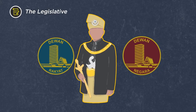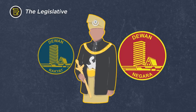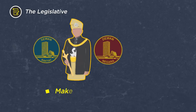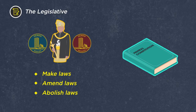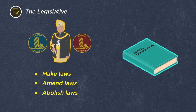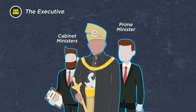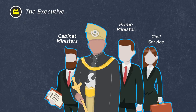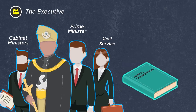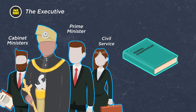The Parliament consists of the Yang Di-Pertuan Agong, the House of Representatives or the Dewan Rakyat, and the Senate, the Dewan Negara. They make, amend, and abolish laws in line with provisions in the Constitution. The Yang Di-Pertuan Agong, Prime Minister, Cabinet Ministers, and Civil Service make up the government, which runs the country according to laws passed in Parliament, which themselves must be in line with the Constitution.